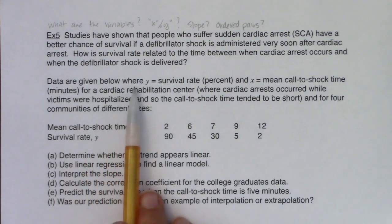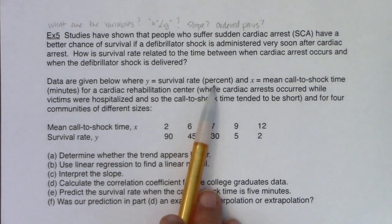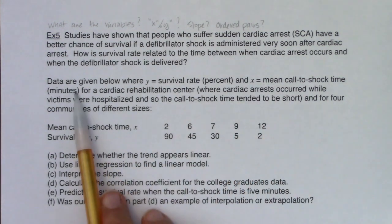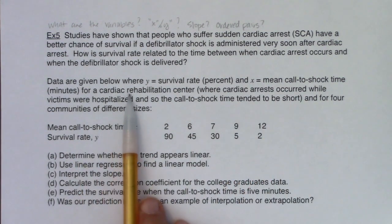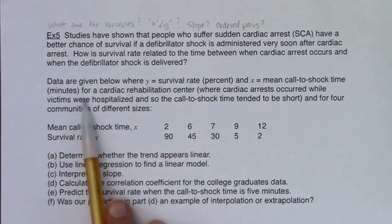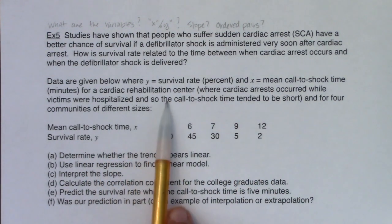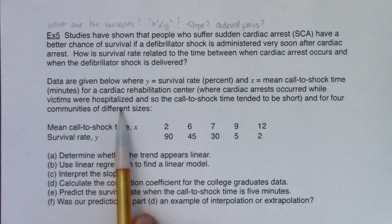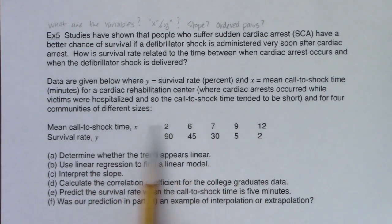If you've ever watched any kind of medical show, when somebody flatlines, when they go into cardiac arrest so their heart stops working, they'll take out these little like they almost look like two irons and they hold them in their hands and they place them on a person's chest and you hear them say clear and then they shock them with electricity and you usually see the person's body jump real quick. That's a defibrillator shock. That's how they restart your heart. Data are given below where y equals survival rate in percent and x is equal to the average call to shock time in minutes.